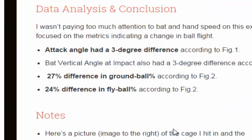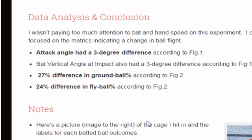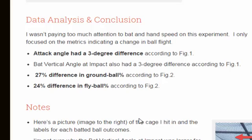You can go to the original blog post linked below this video for full details, but you can see the attack angle showed a three-degree difference and the bat vertical angle at impact was also a three-degree difference, erring more on the straight back knee side. Most significantly, there was a 27% difference in ground ball percentage and a 24% difference in fly ball percentage.